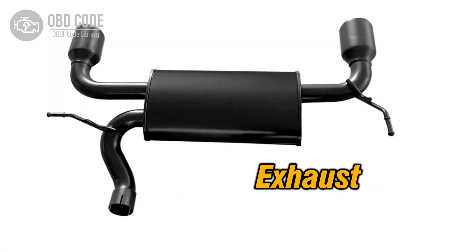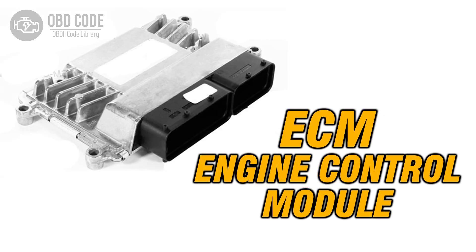Repair or replace them as necessary. 3. Check the exhaust system for any obstructions or leaks that may affect pressure sensor readings. Clear obstructions and repair leaks as needed. 4. Verify the operation of the ECM and consider reprogramming or replacing it if other potential causes have been addressed but the issue persists.